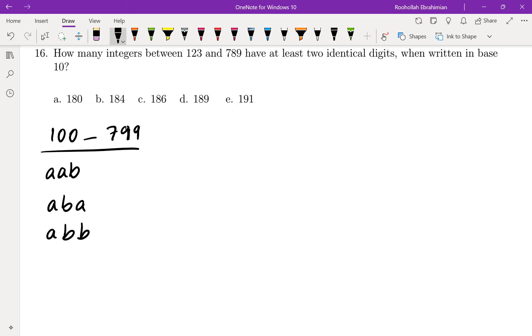Let's count each one of them. Since the number is between 100 and 799, the digit a could be anywhere from 1 all the way to 7, and the digit b could be anywhere from 0 to 9.